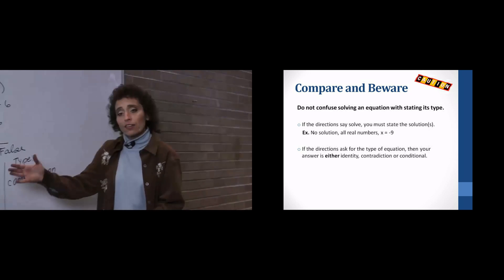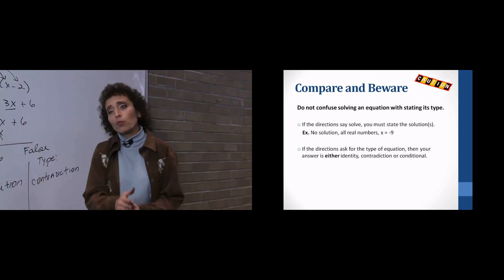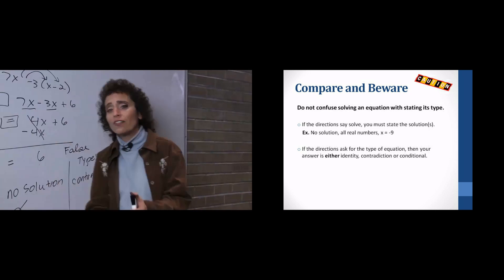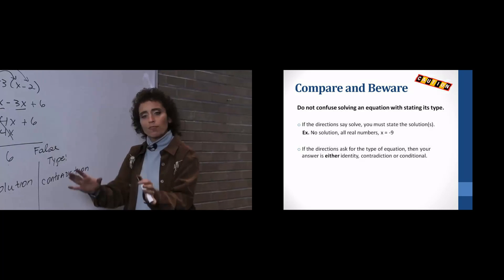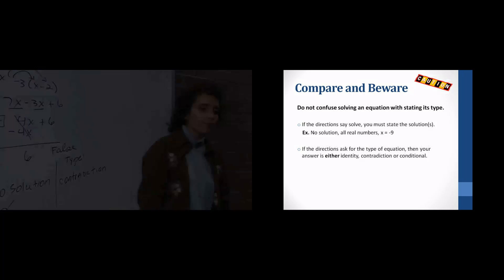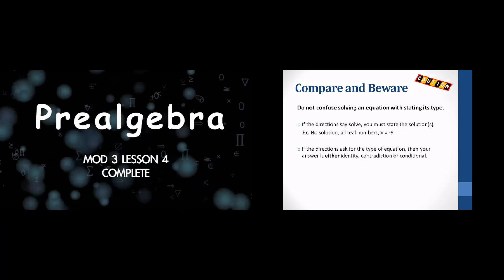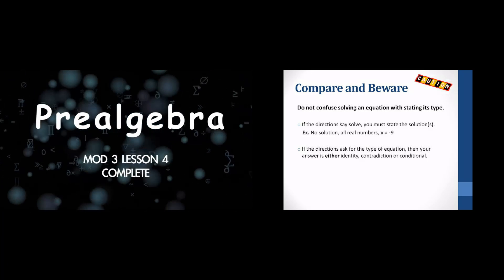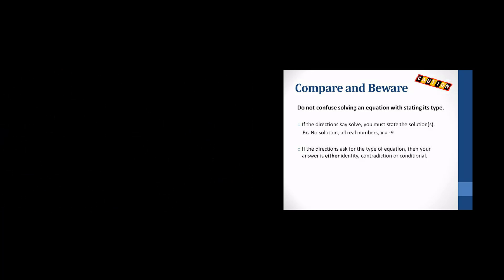The last piece of advice: as soon as the variable drops out, stop. And make sure you look at the directions of the problem. If it says solve, the answer will be either x equals whatever, no solution, or all real numbers. If it says what type of equation is this, your answer will be either contradiction, conditional, or identity. Okay, so that takes care of equation solving. The next time we meet, we're going to talk about linear equations in one variable and problem solving, which is a lot more fun — real life problems. Thanks for joining us. Bye.